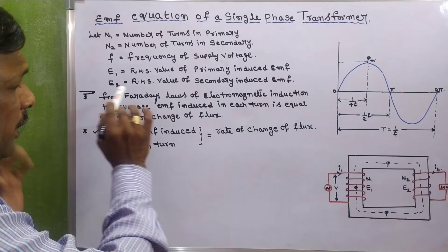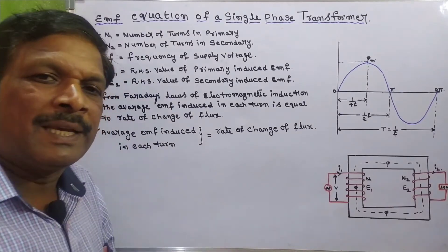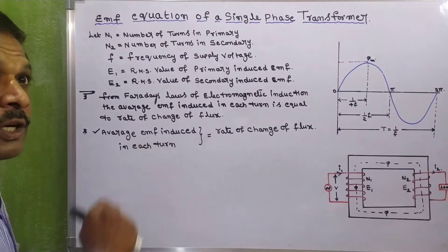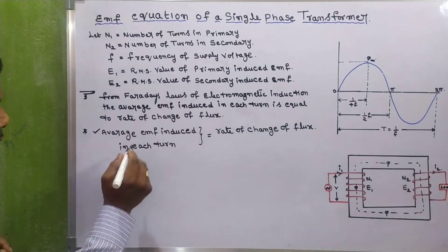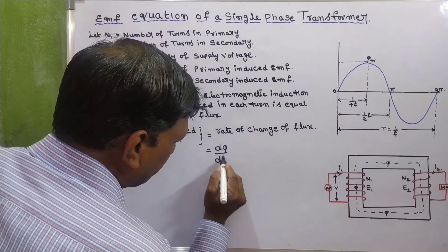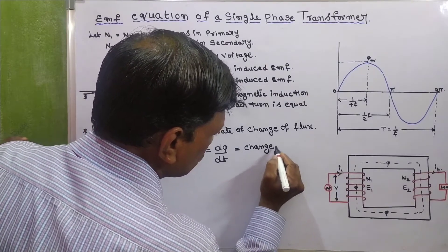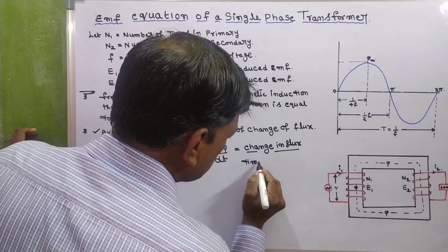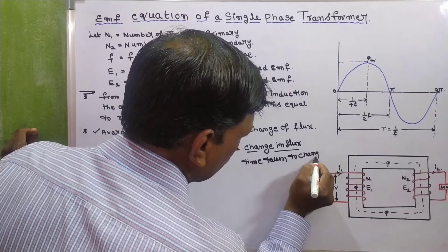According to Faraday's laws of electromagnetic induction, the average EMF induced in each turn is equal to the rate of change of flux. We can write this as: average EMF induced in each turn equals dφ/dt, where dφ is the change in flux and dt is the time taken to change the flux.